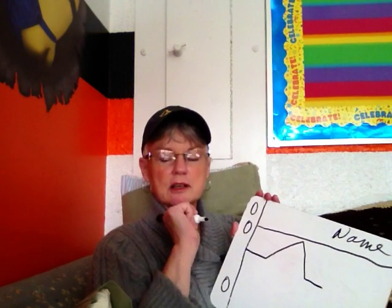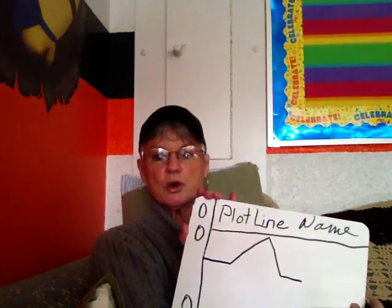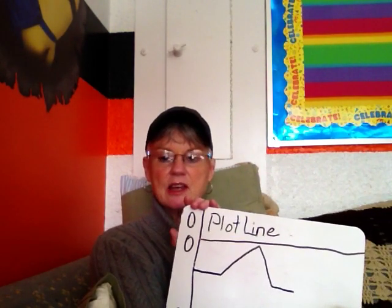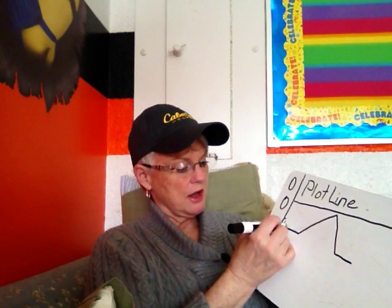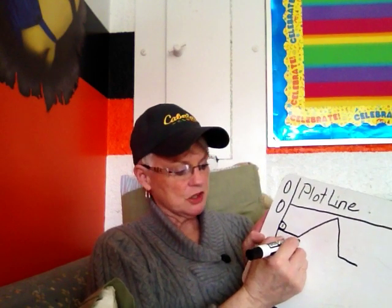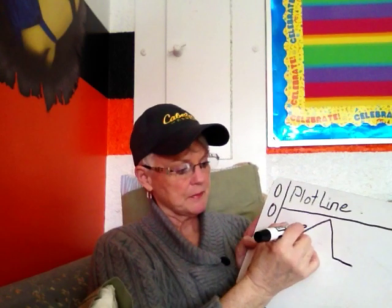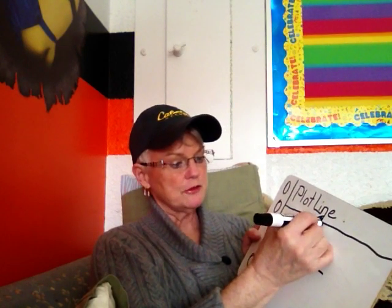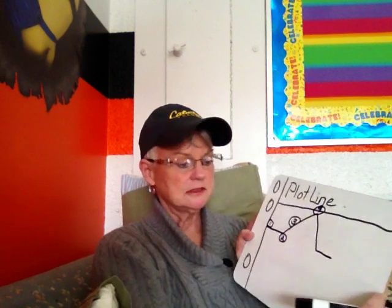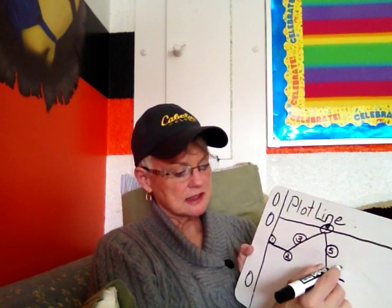Up here in the top part we're going to give our notes a title. This is called Plot Line. Every story has a plot line, and we are going to learn about the plot line for our story. Put a one at the beginning, a two where the line starts to go up, a three on the uphill, a four at the very top of the hill, a five on the downside, and a six at the bottom.